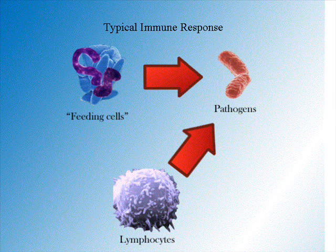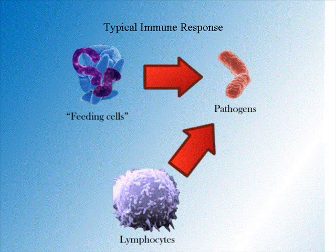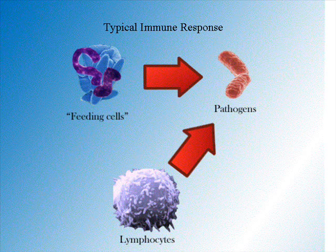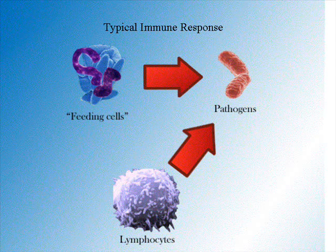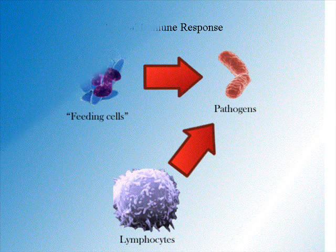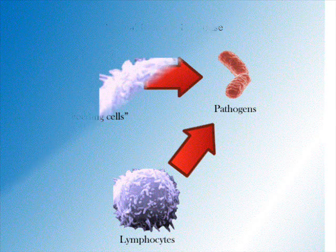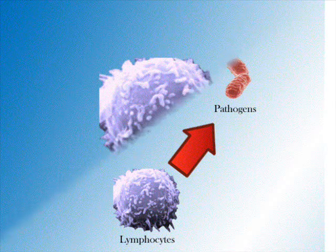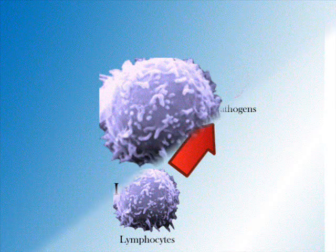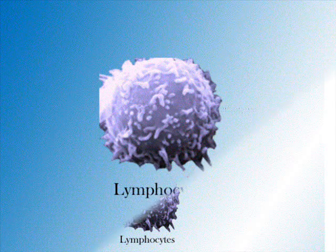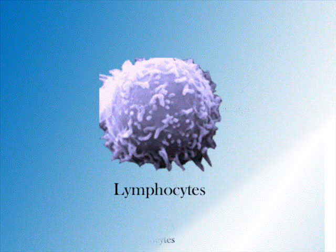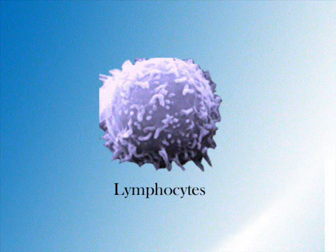Another group of immune system cells, lymphocytes, further the process by determining whether the invader is self or non-self. If the microorganism is determined to be non-self, the lymphocytes are responsible for controlling the infection and also marking it in order to protect against a potential return attack in the future.